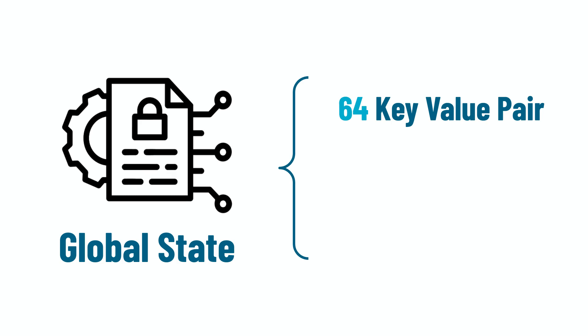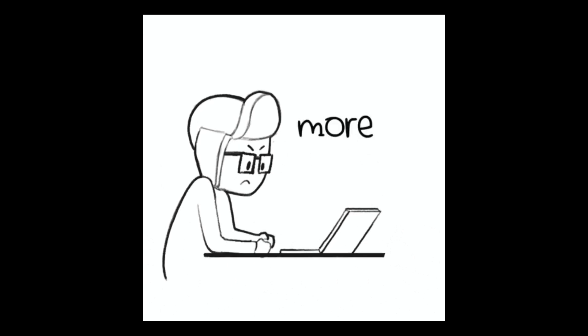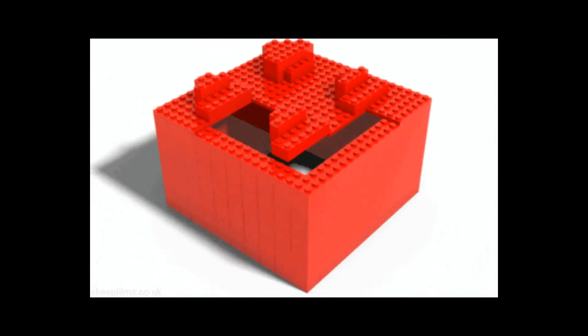Box storage was added as a new type of state for Algorand smart contracts around November 2022. Before box storage, you could only store 64 key-value pairs with a total of 8 kilobytes of memory with global state, and 16 key-value pairs with a total of 2 kilobytes of memory for local state. Before box storage, there was a limited amount of storage you could work with. This limitation caused a lot of frustrations for developers building applications that needed to store a lot of data on chain. Now with box storage, you can essentially create an infinite amount of box storage on demand, freeing up limitations and empowering developers to build complex and powerful applications on the Algorand blockchain.